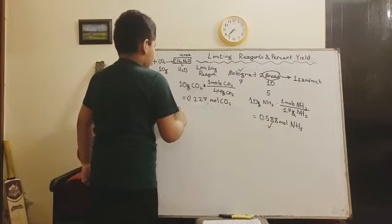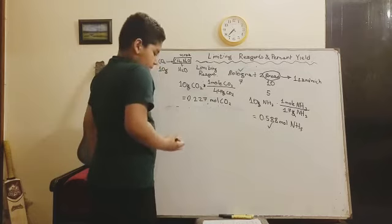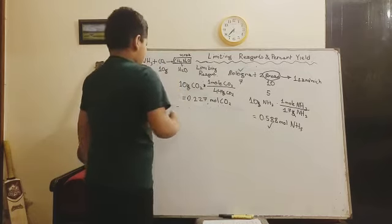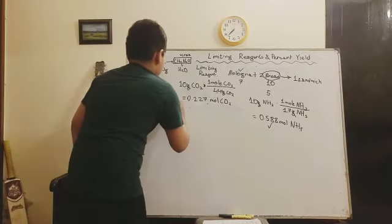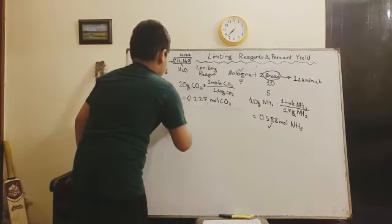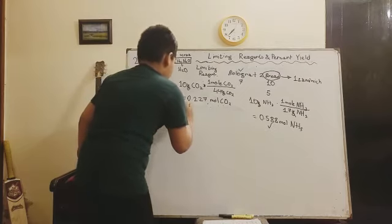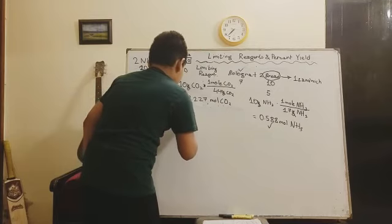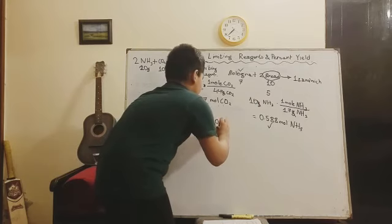So these are theoretical yield, so that doesn't actually happen. There is actually a fraction of yield that happens which we call the percent yield. It is the actual yield over the theoretical yield, the thing you are expecting.